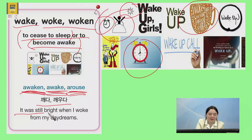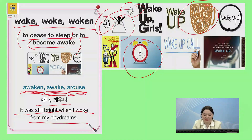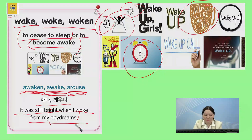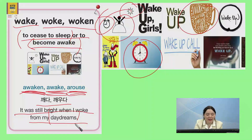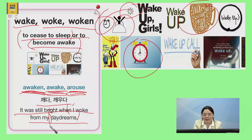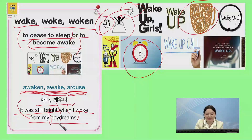So you could say, it was still bright when I woke from my daydreams. So daydreams is 백일몽. 내가 백일몽에서 깨어났을 때, when I woke, 여전히 날이 밝았습니다. It was still bright.